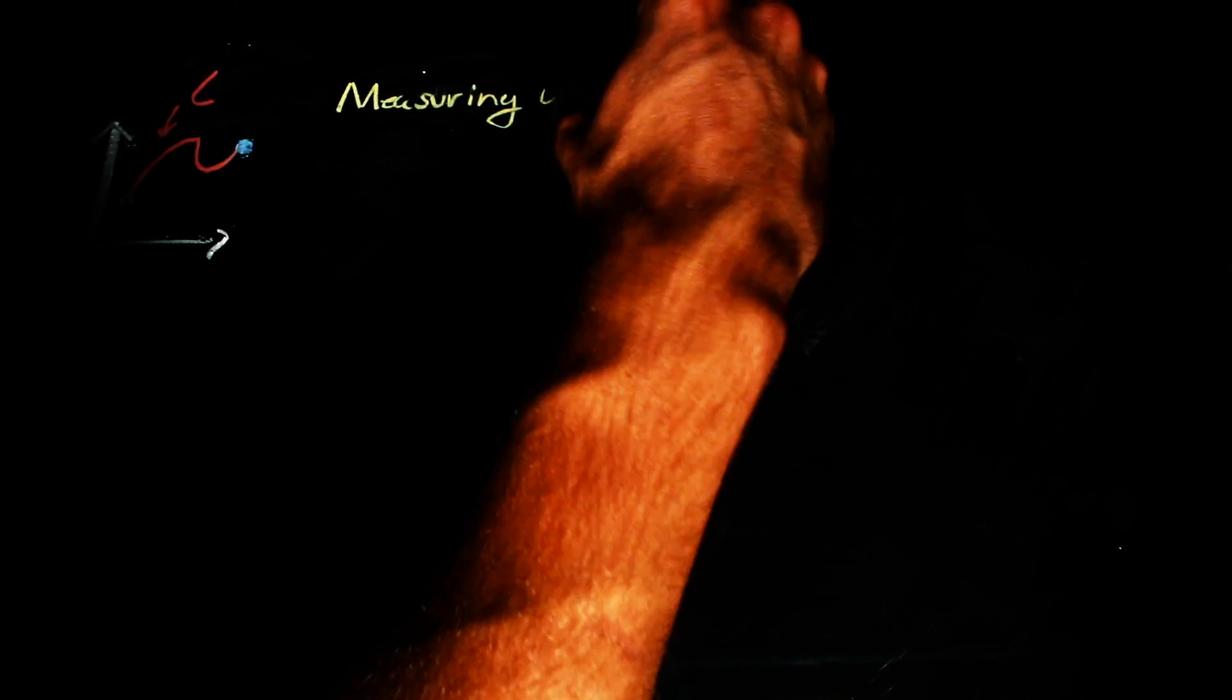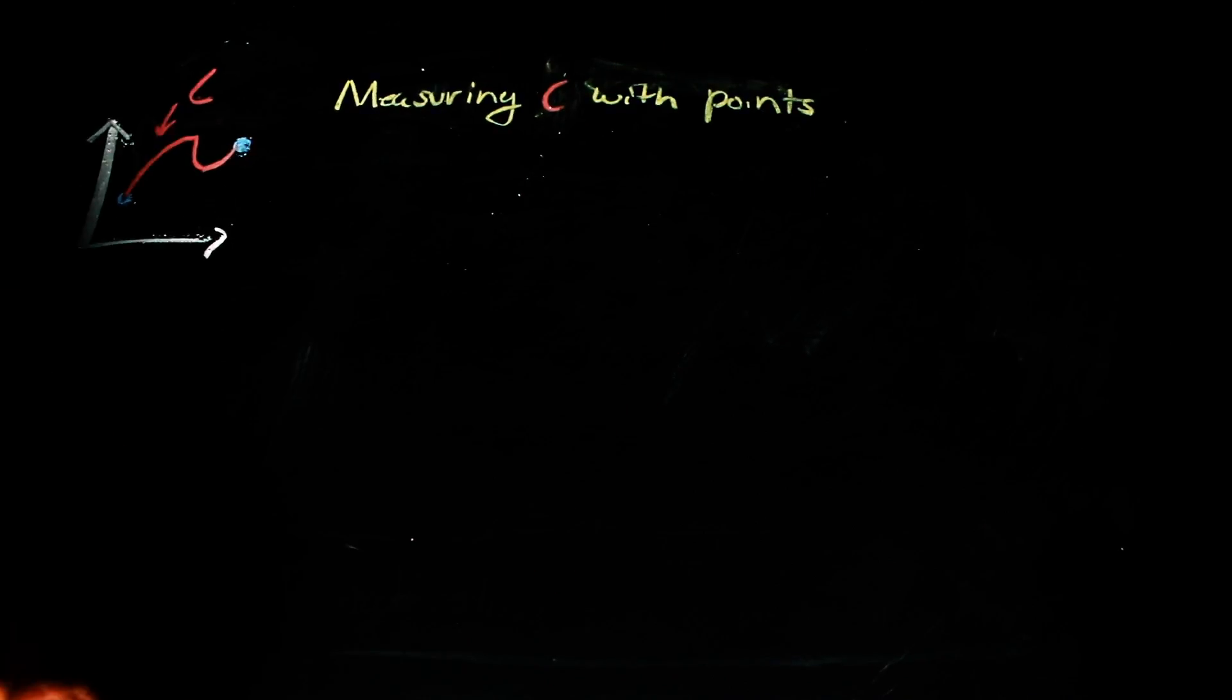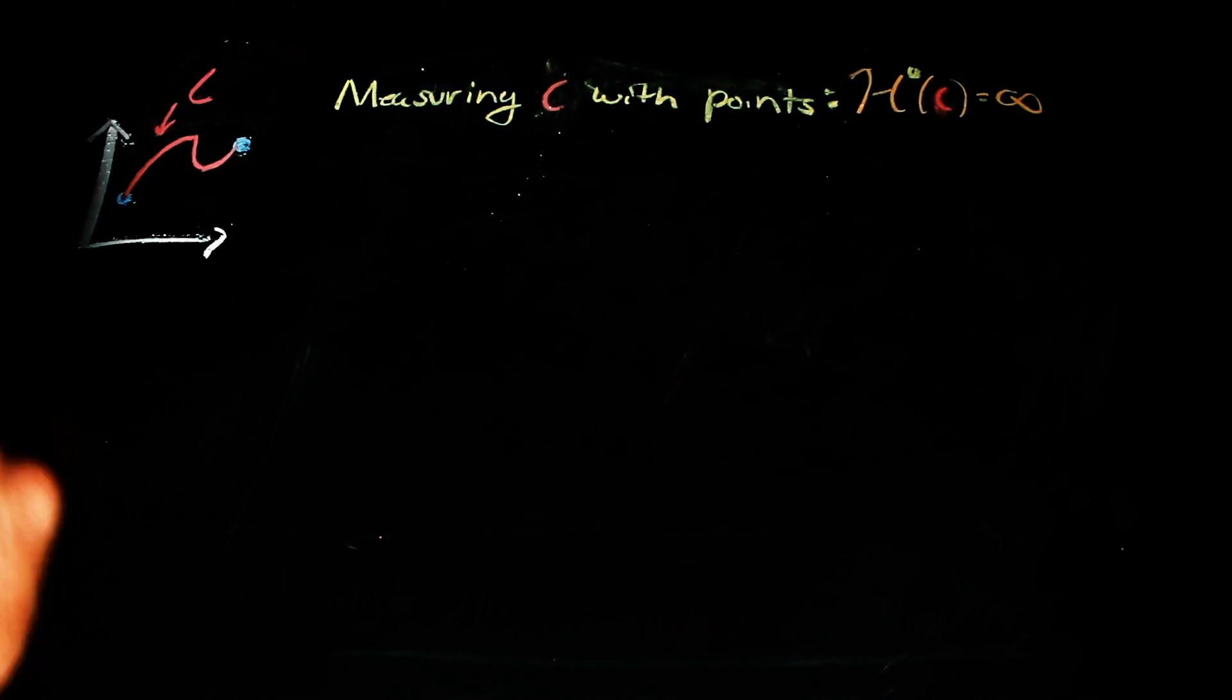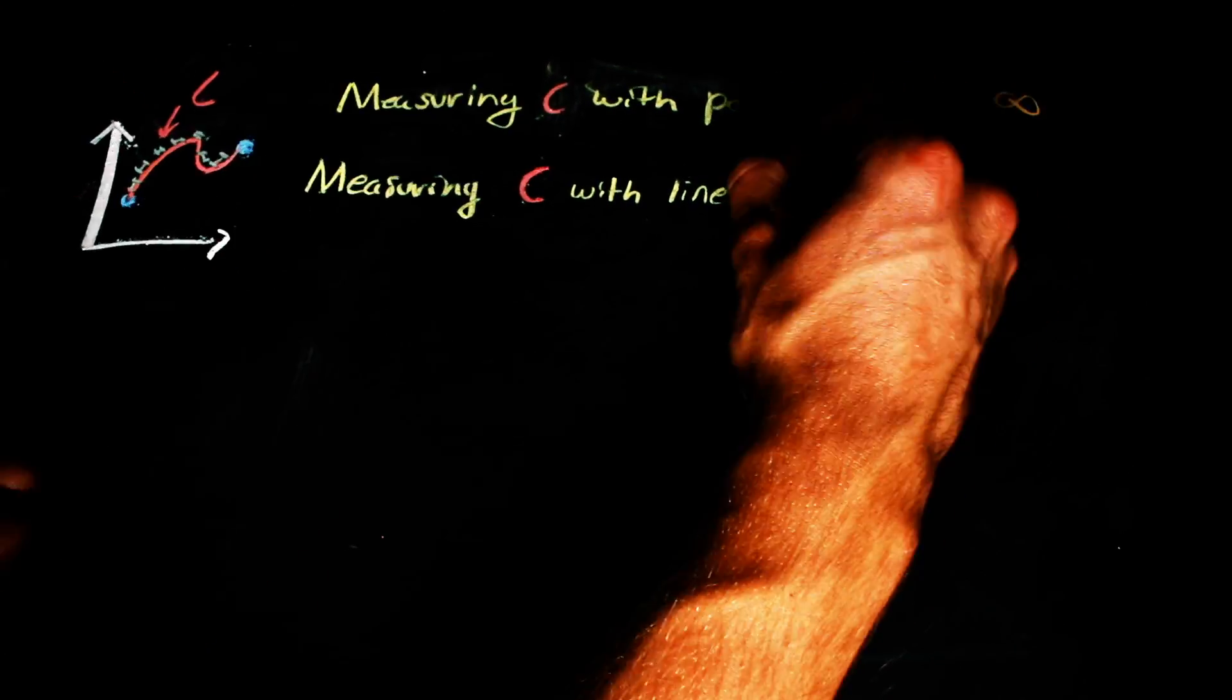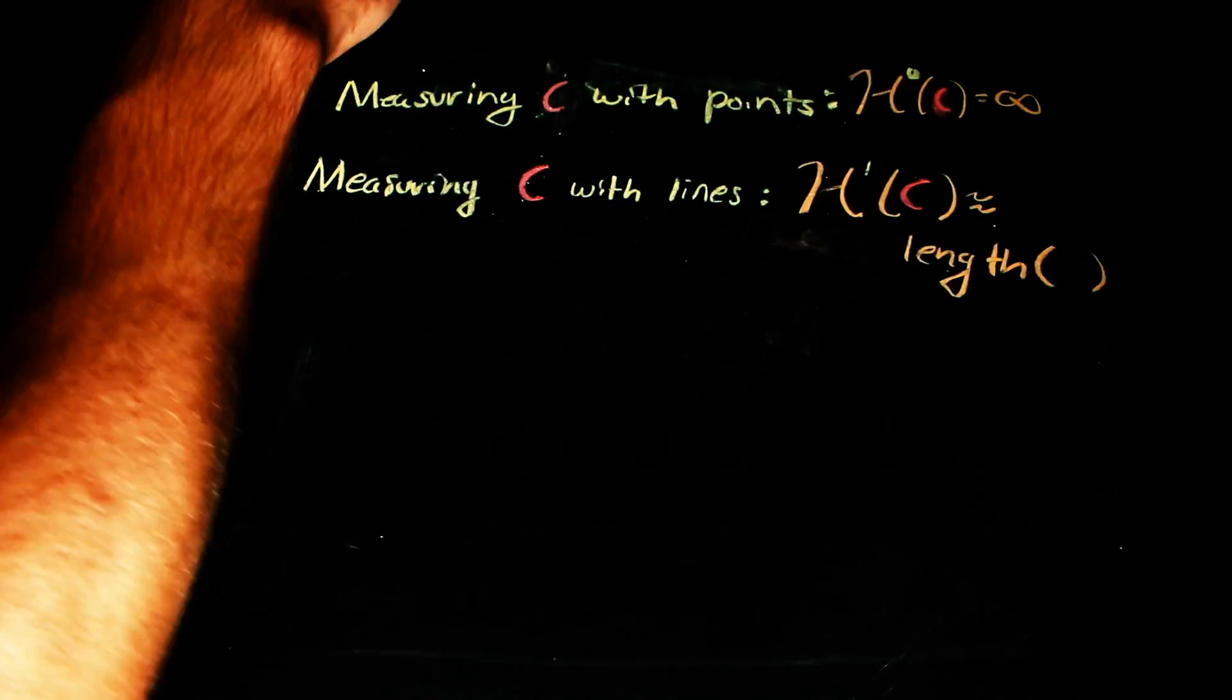To start to understand this a bit more, let's look at a curve and call it C. If I were to just measure C with points, there would be infinitely many of them, which isn't super satisfying. And if we tried to measure it with another line, then we would have something akin to its length.